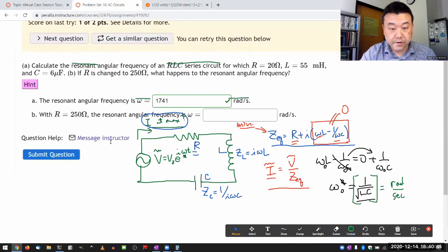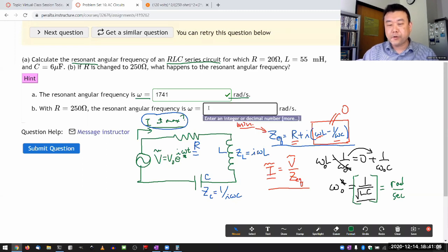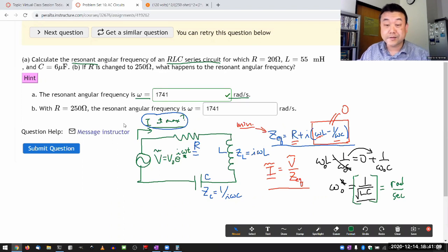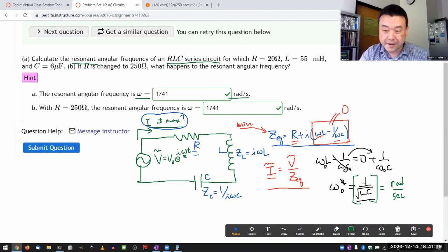And the reason I want you to plug in the numbers is to demonstrate this. So for part B, they changed the resistance from 20 ohm to 250 ohm. And after a brief thinking, I hope you arrive at this conclusion that the resonant angular frequency is still 1741 radians per second. Because when you look at the expression that you derived earlier, you see there's no dependence on resistance, because the resistance wasn't something we could do anything about. So yeah, resistance doesn't play any role here.